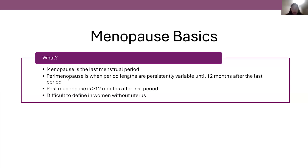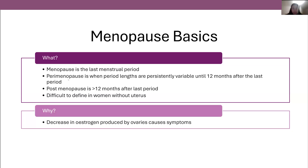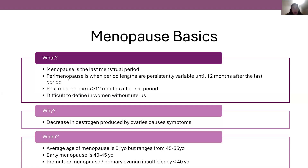Why does this occur? Well, there's a decrease in estrogen produced from the ovaries, and the estrogen deficiency is what predominantly leads to these symptoms. It typically occurs at an average age of 51 years old, but ranges from 45 to 55. Early menopause is when it occurs between 40 and 45 years of age, and if it occurs under 40 it's termed premature menopause or primary ovarian insufficiency.